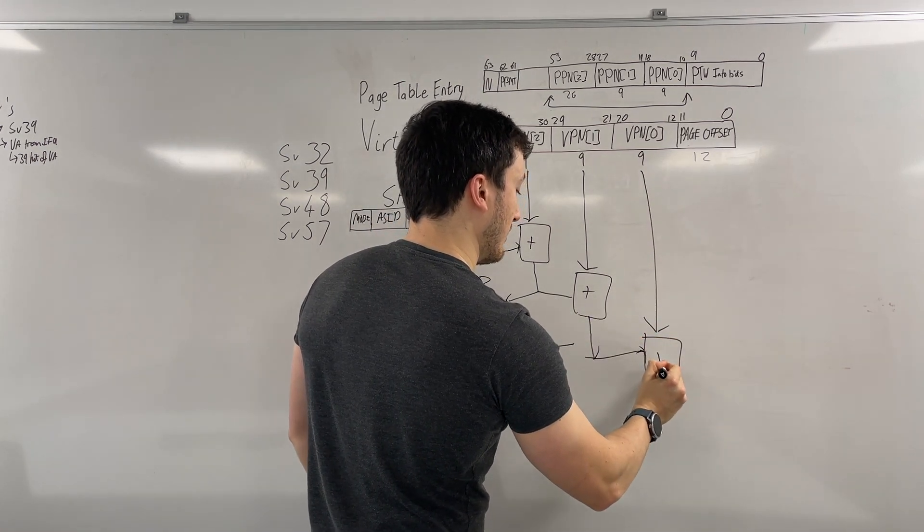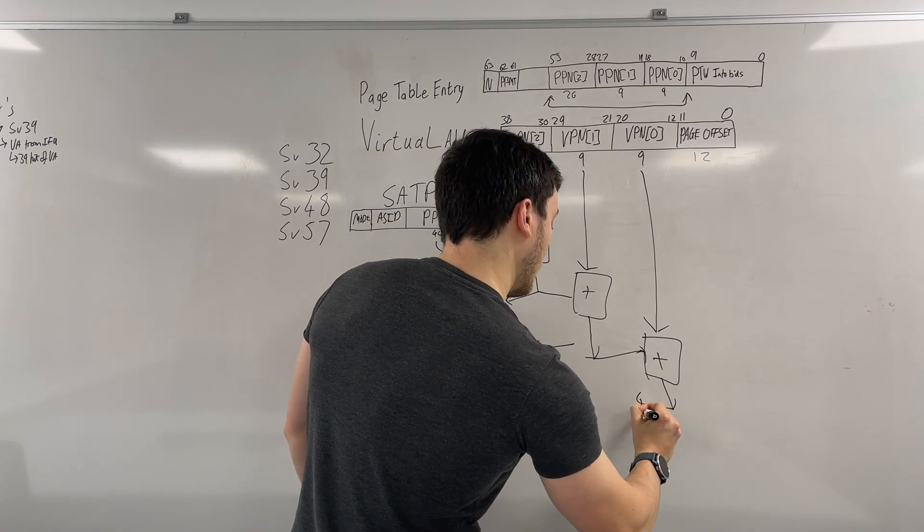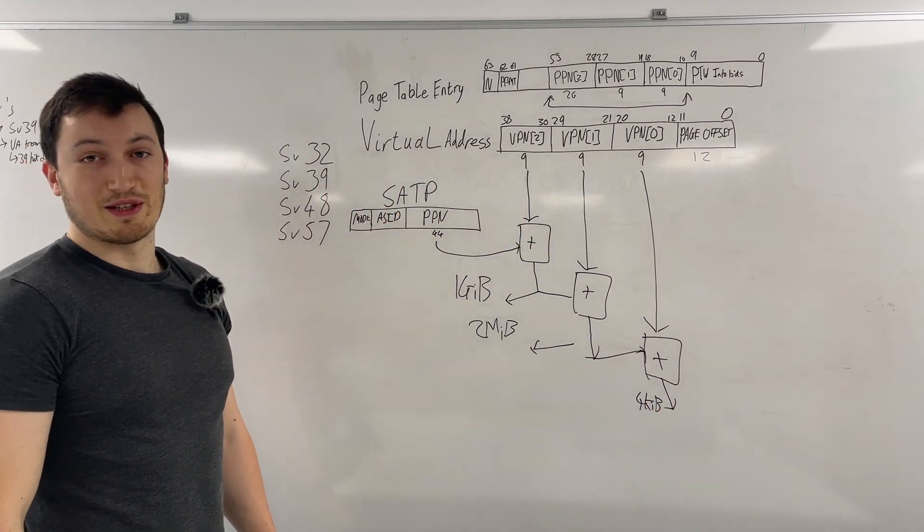And then we can finally arrive at a four kilobyte page. So that's how you do a page table walk.